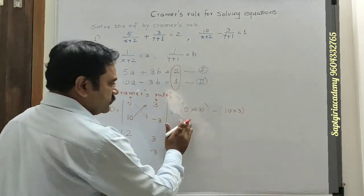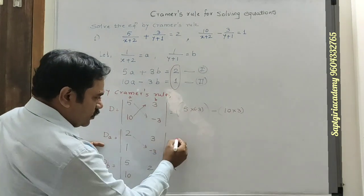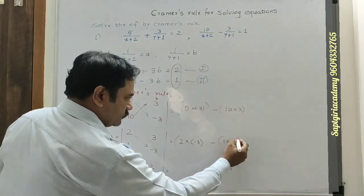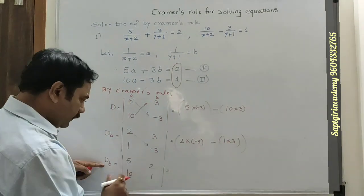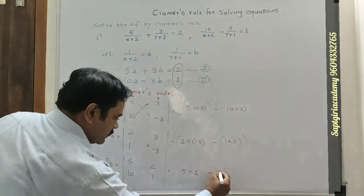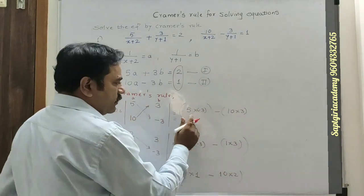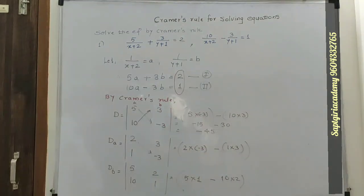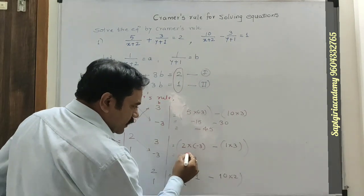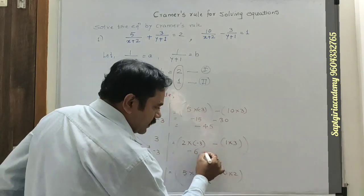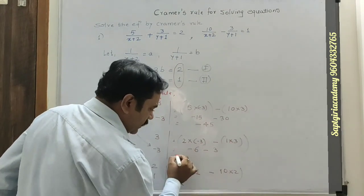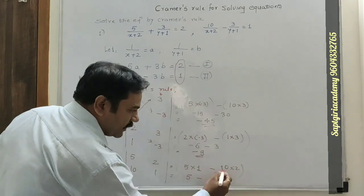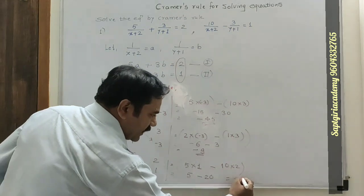Now we solve the determinants. For D: 5 into minus 3 minus 10 into 3 gives minus 15 minus 30, so D is minus 45. For Da: 2 into minus 3 minus 1 into 3 gives minus 6 minus 3, so Da is minus 9. For Db: 5 into 1 minus 10 into 2 gives 5 minus 20, so Db is minus 15.